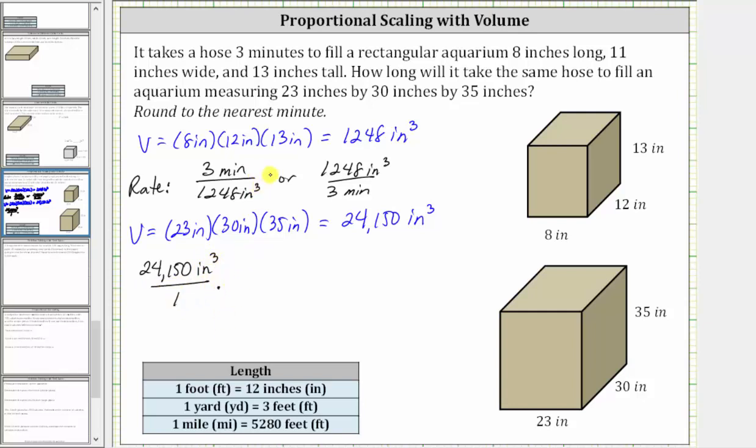To decide which rate to use, remember, we want the units of cubic inches to simplify out, and since we have cubic inches in the numerator here, we will use the rate where we have cubic inches in the denominator, which is this first rate of three minutes per 1,248 cubic inches.